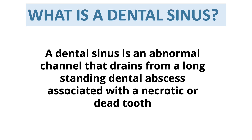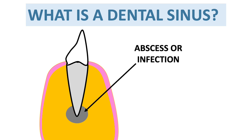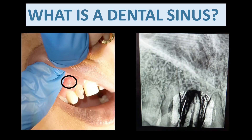Try to understand with the figure. As you can see, an abscess or infection is associated with the tooth, and if it is chronic it leads to formation of a sinus tract, which results in a pimple-type swelling in the mucosa. This pimple-like swelling is called a sinus, and the tract which the infection formed is called the sinus tract — a channel that drains from a long-standing abscess associated with a decayed or carious tooth.